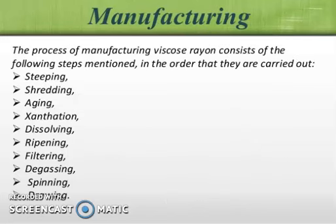The manufacturing process involves various stages: stripping, shredding, ageing, xanthation, dissolving, ripening, filtering, degassing, spinning, and drawing.